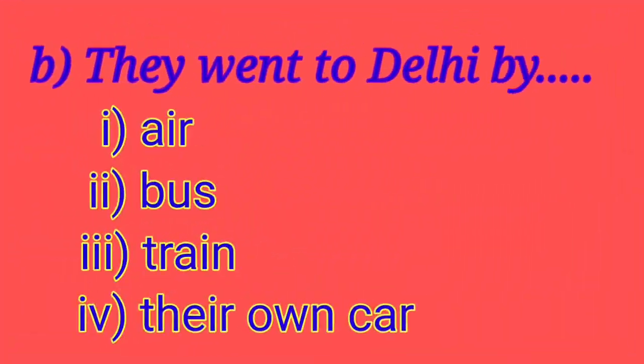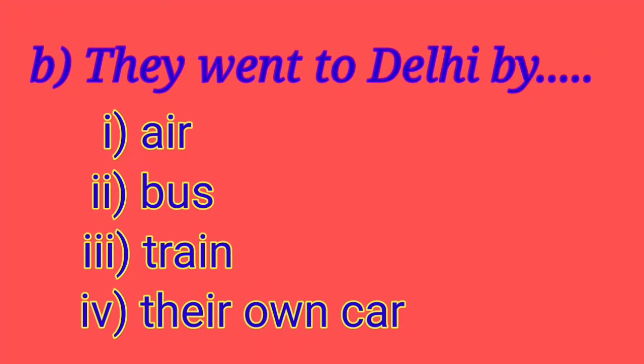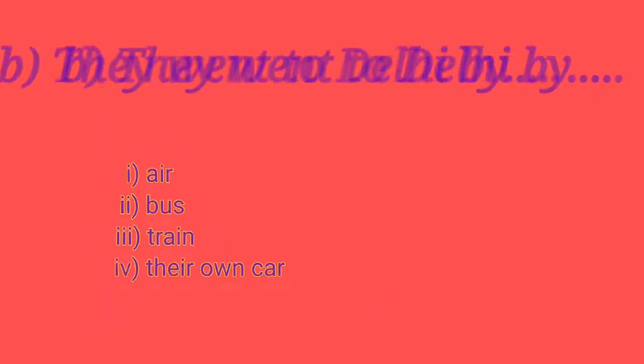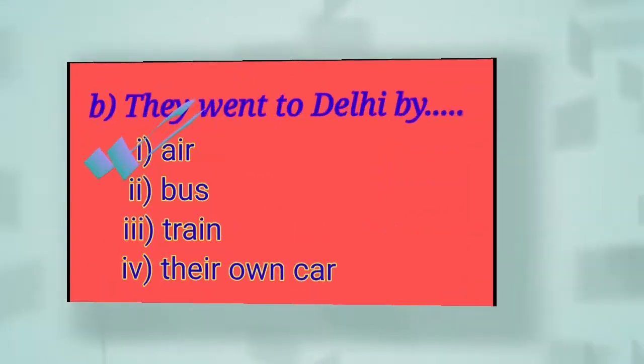Number B: they went to Delhi by — number one: air, number two: bus, number three: train, number four: their own car. The correct one is number one: air.